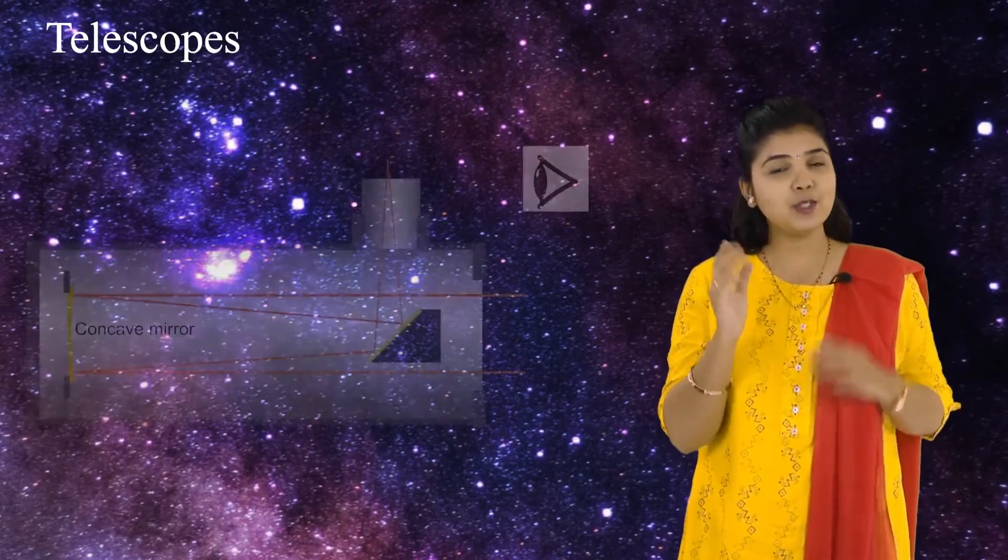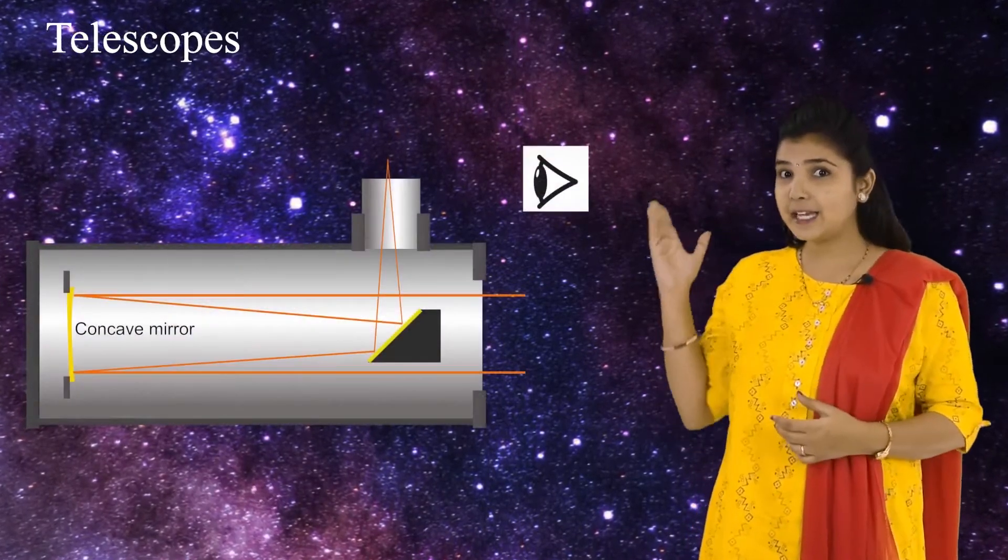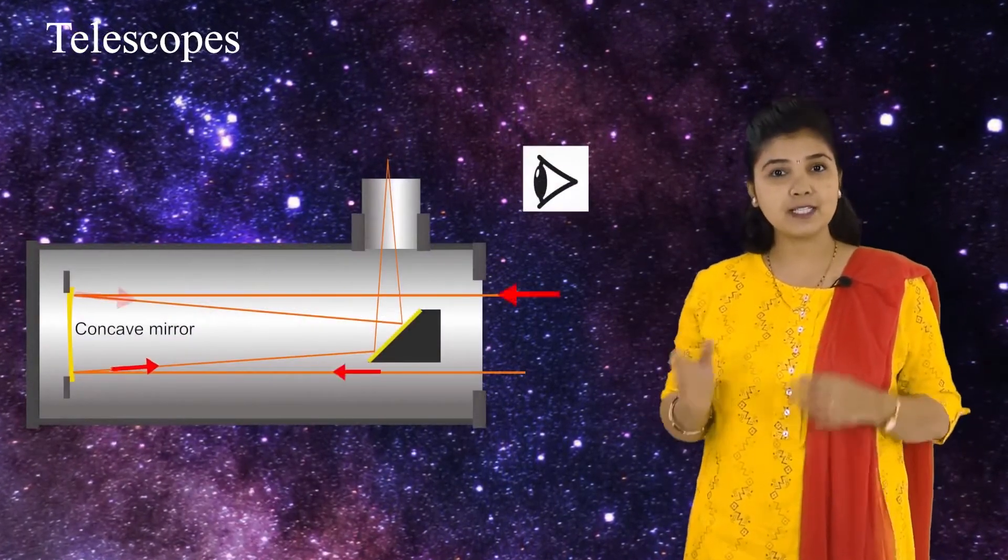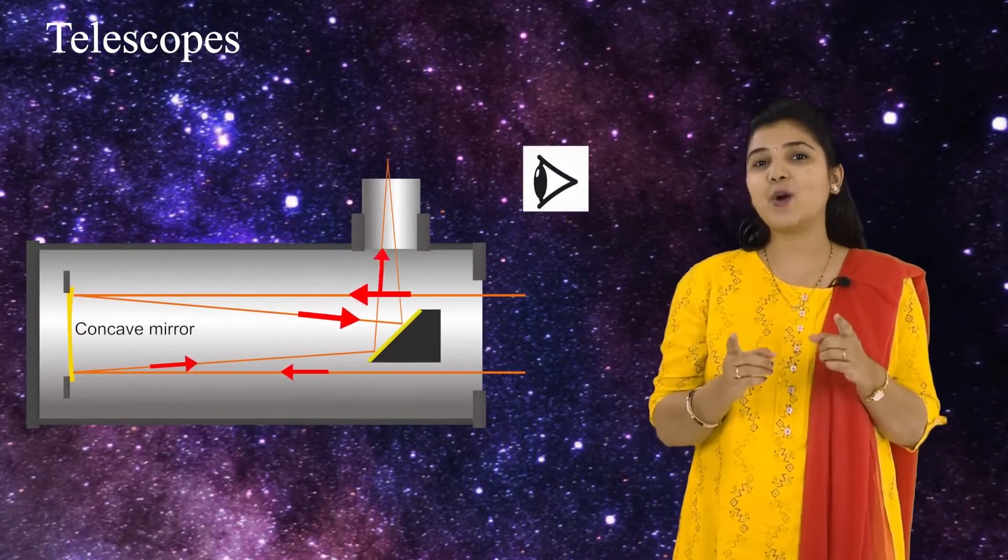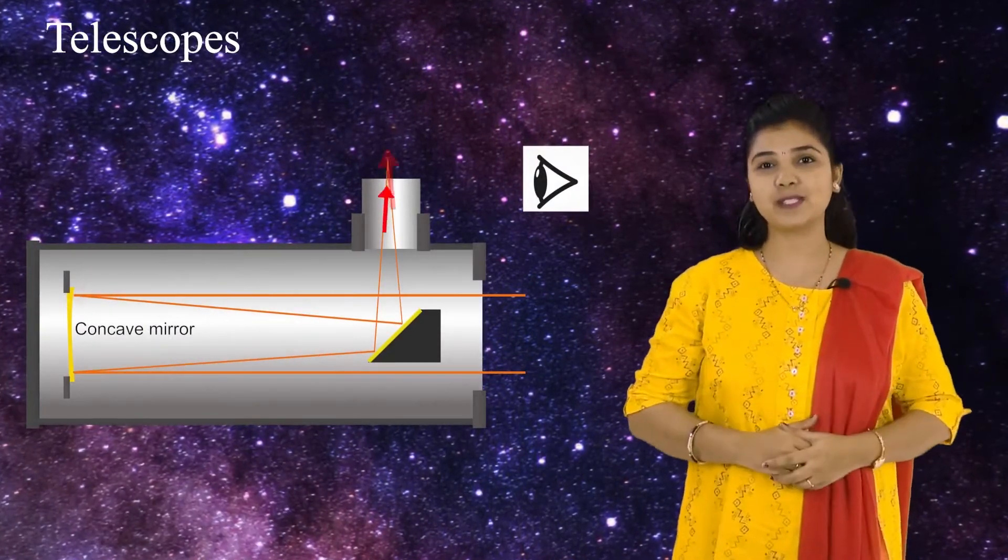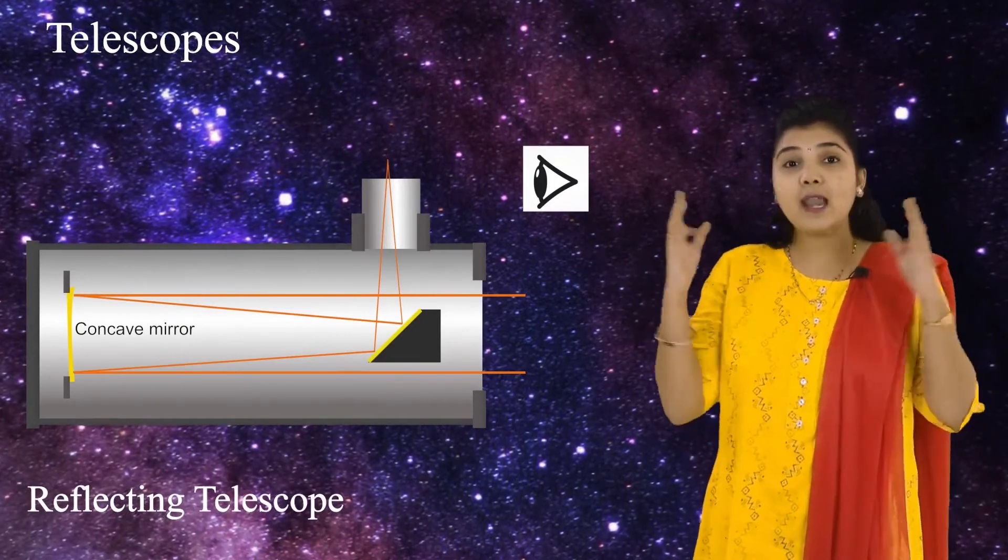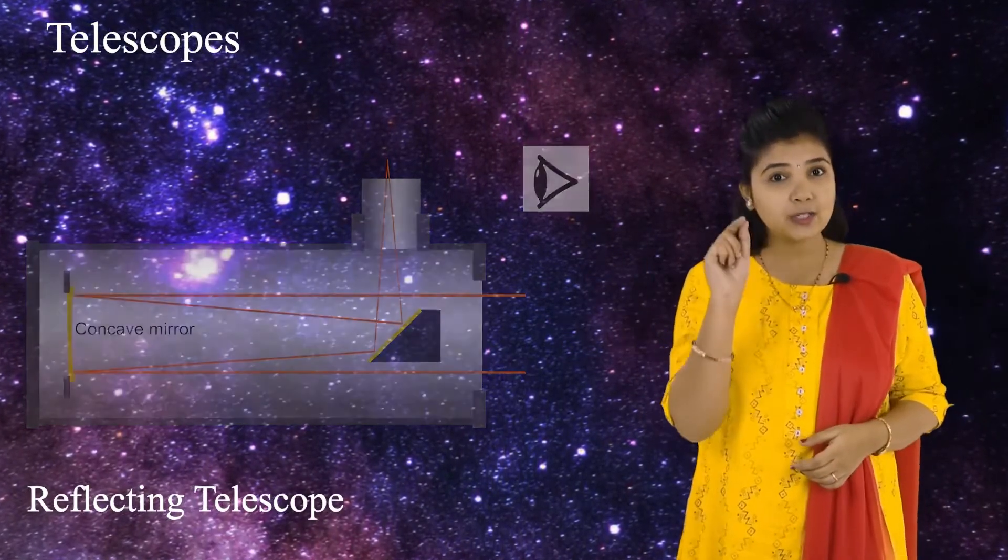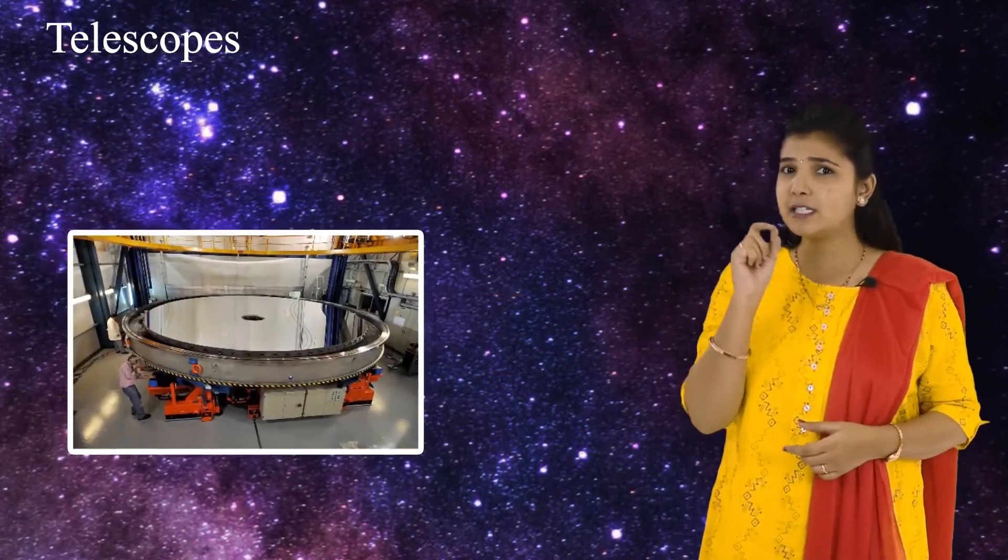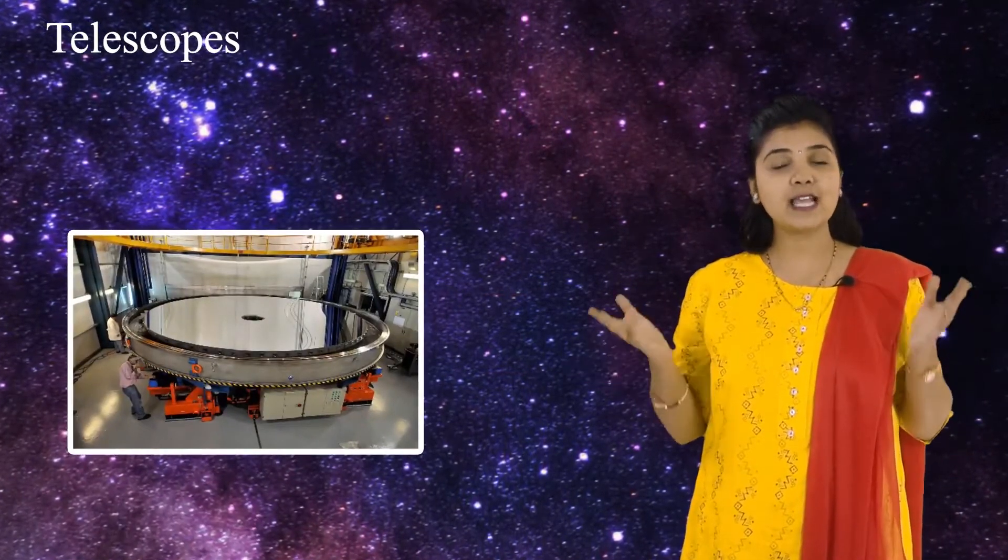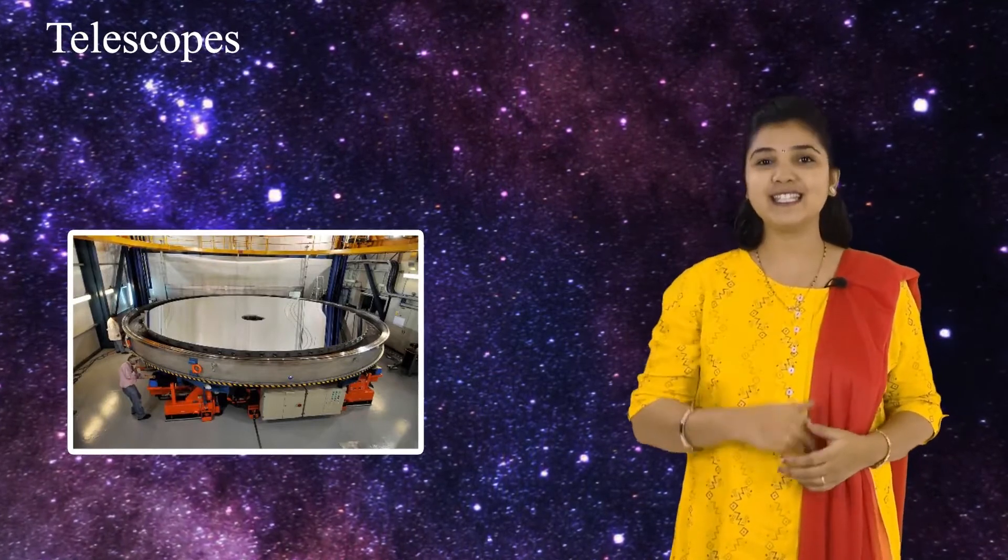To overcome these difficulties, telescopes are made using concave mirrors. As light rays get reflected by the mirrors in these telescopes, they are called reflecting telescopes. In order to get a bright image of the source, large mirrors are necessary so that they can collect a large amount of light from the source. But it is easier to make large mirrors as compared to making large lenses.